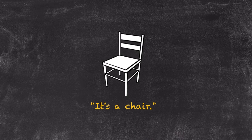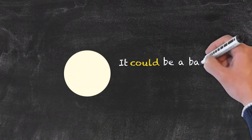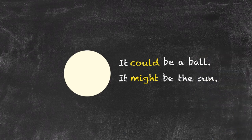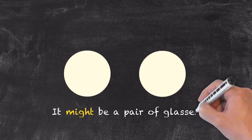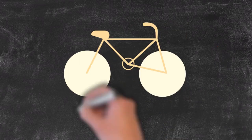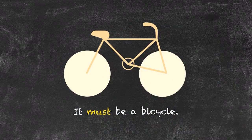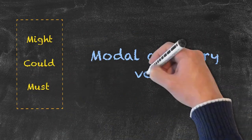What if we were to use the simple classroom Pictionary game where students have to guess what you're drawing? What about this? It could be a ball. It might be the sun. Let's draw a second circle. It might be a pair of glasses. It could be a stereo radio. If we were to continue we would say it must be a bicycle. These words that I've boxed — might, could, and must — are called modal auxiliary verbs.